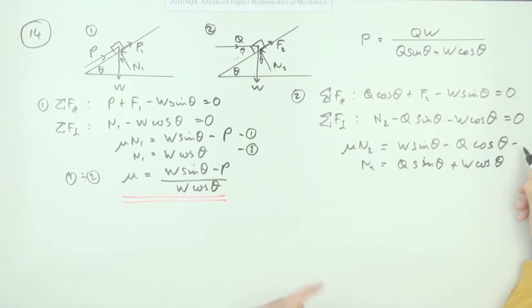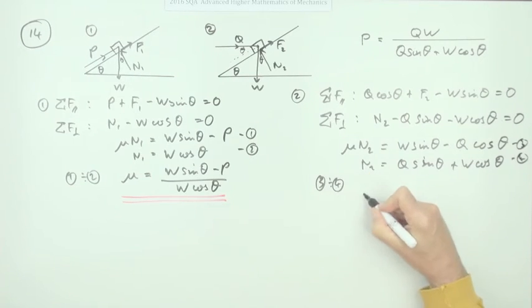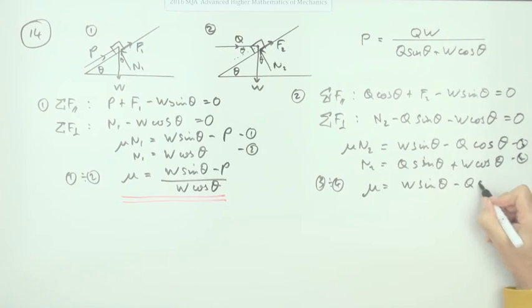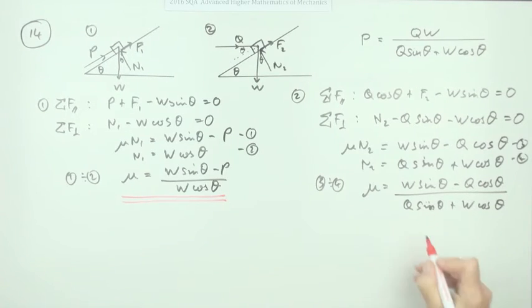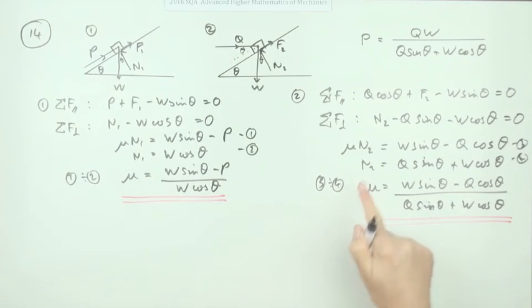So there again we've got equations, maybe I should give them different names, call that three and four. And then if you do three divided by four, you'll have μ equals the top divided by the bottom: W sin θ minus Q cos θ over Q sin θ plus W cos θ. Now everything that you've got is just made up of P's and Q's and W's and θ's.